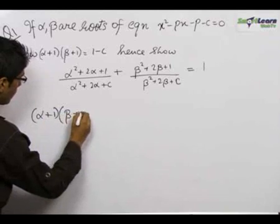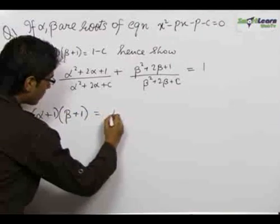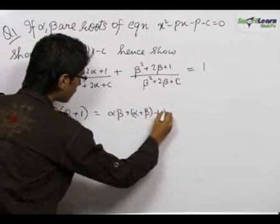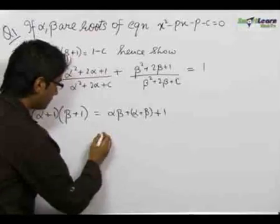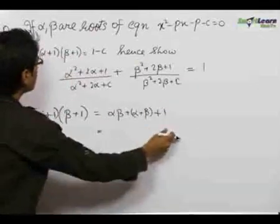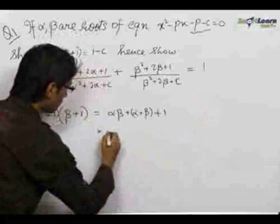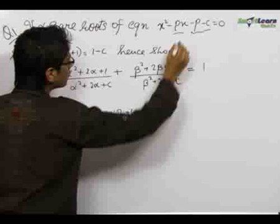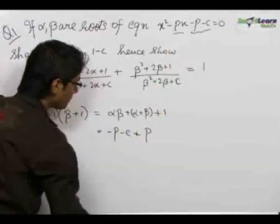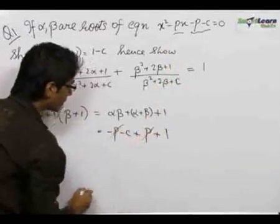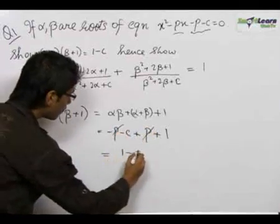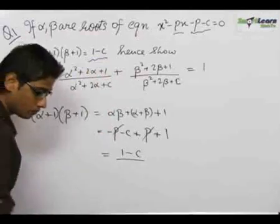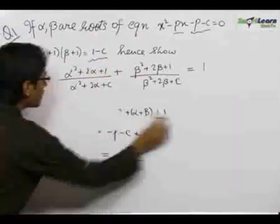For the first part, we need to show that (alpha + 1)(beta + 1) = alpha*beta + alpha + beta + 1. We know that alpha*beta, the product of the roots, equals -p - c, and alpha + beta, the sum of the roots, equals +p. So p and -p cancel out, and we get (alpha + 1)(beta + 1) = 1 - c, which we needed to prove.